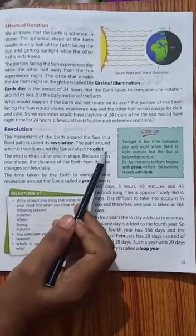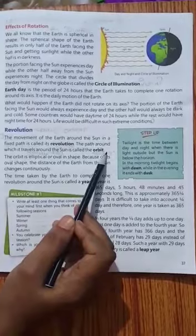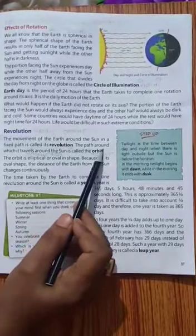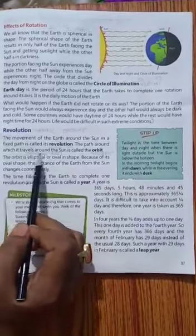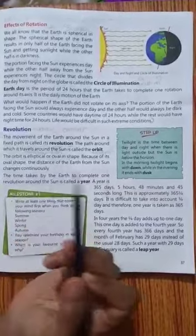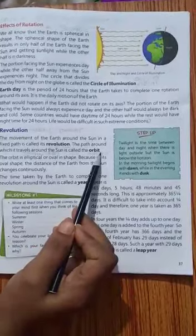The path around which earth travels around the sun is called the orbit. Orbit means parikrama karna. The path, woh raasta jis pe hamari earth travel karti hai around the sun, sun ke aas paas, usse orbit bolta hai.